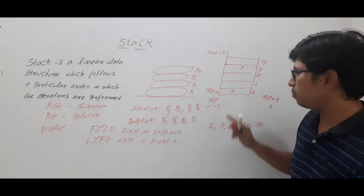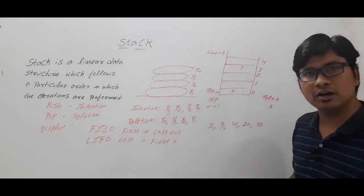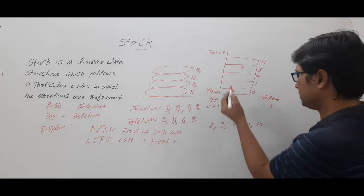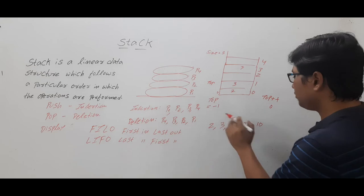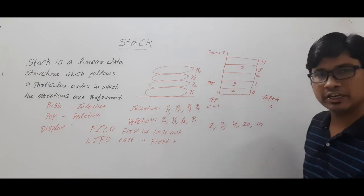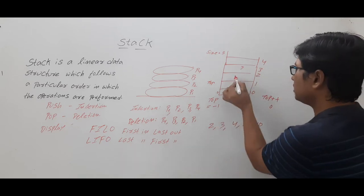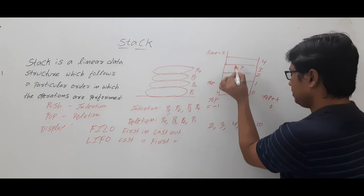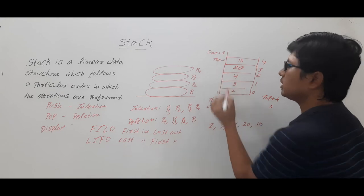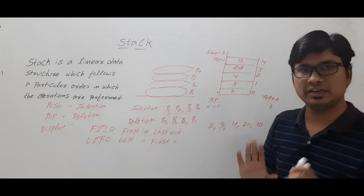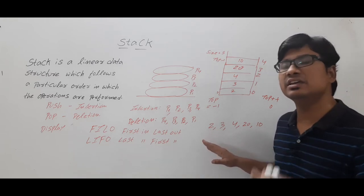To push element 2, we increment top from minus one to zero, then insert at index 0. Top now points to element 2. To push element 3, increment top to 1 and insert there. To push element 4, increment top to 2 and insert. Similarly for 20 and 10 — after all pushes, top is pointing to element 10 at index 4. This is the push operation.